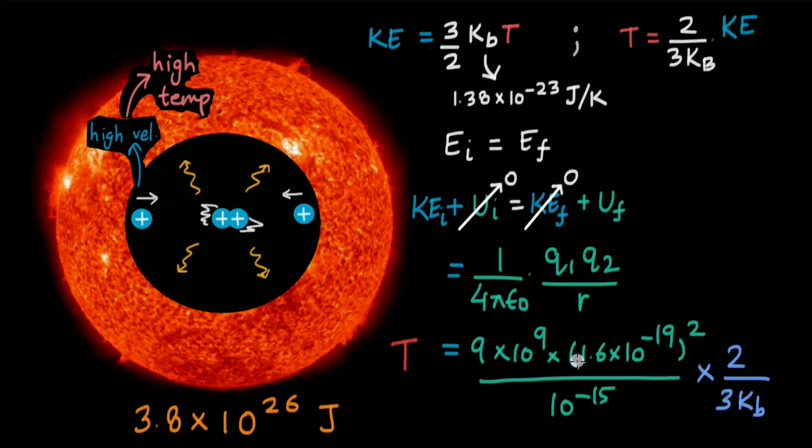Alright, hopefully you have given this a try. The temperature that you should have arrived at is 1.1 into 10 to the power 10 kelvins. But now, the real temperature of the sun's core is not this. It is much lower. It is 15 into 10 to the power 6 kelvins or 15 million kelvins. It is much lower than what we arrived at. This temperature will not give enough velocity to the protons so that they can come closer and fuse. And that is why the sun should not be alive.